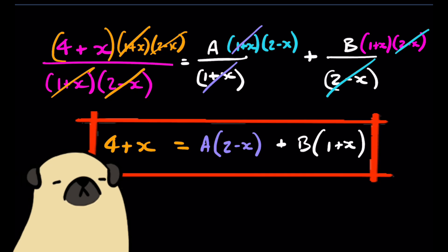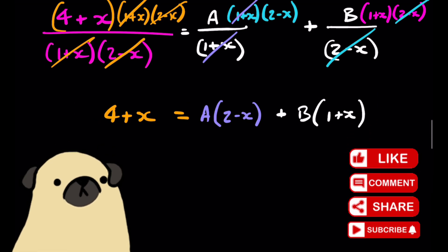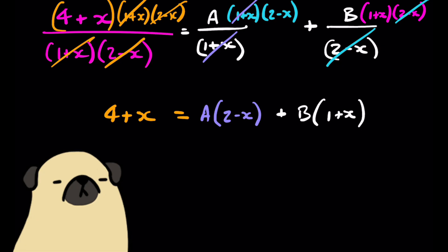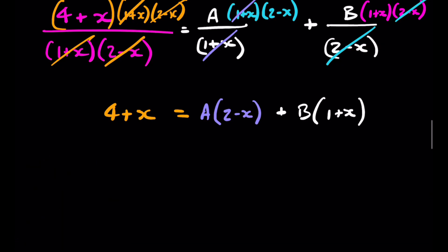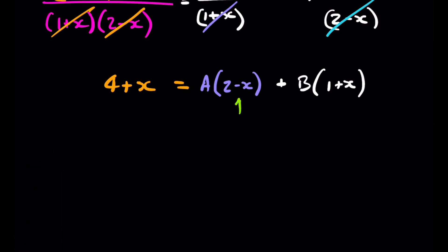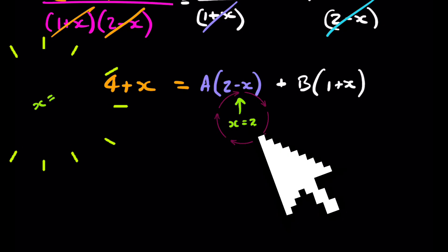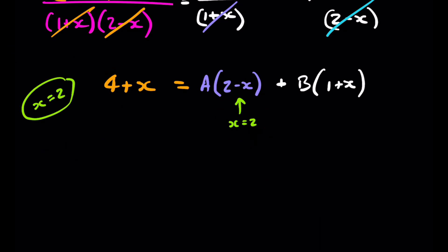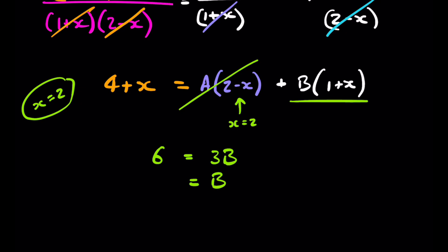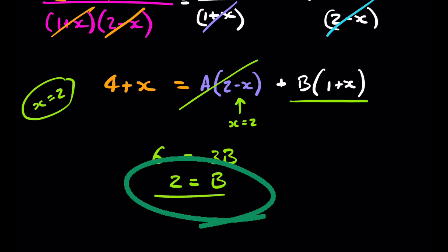In the future we can jump straight to that result since the same cancellation pattern repeats. Now we substitute a value to eliminate one of the letters. We want x to make one bracket equal to zero, so let's substitute x=2 across the whole expression. This term with A disappears, leaving 6 = 3B.